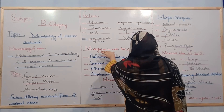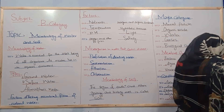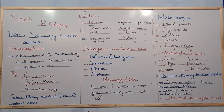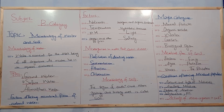We will now discuss microorganisms in water that cause disease. Sometimes microorganisms affect health because drinking water can also contain microbial contaminants. Drinking water is disinfected using chlorine, ozone, ultraviolet radiation, and chlorine dioxide, which eliminate bacteria in water.